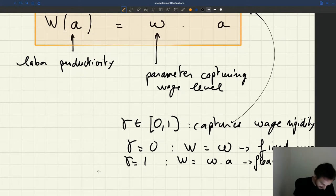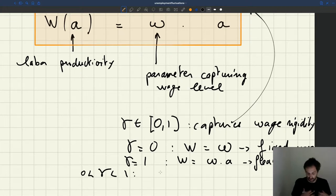And if gamma is strictly between 0 and 1, then we have a rigid wage, which is not, the wage is neither fixed nor perfectly flexible. It's just rigid.